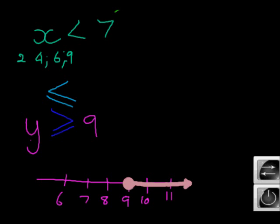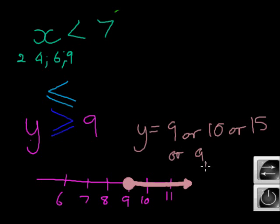Okay. So, in other words, y can be values like what? Nine. Or, ten. Or, fifteen. Or, not just integers, not just whole numbers. It can be nine comma zero one. Any value that's bigger than nine. Y can take that value.